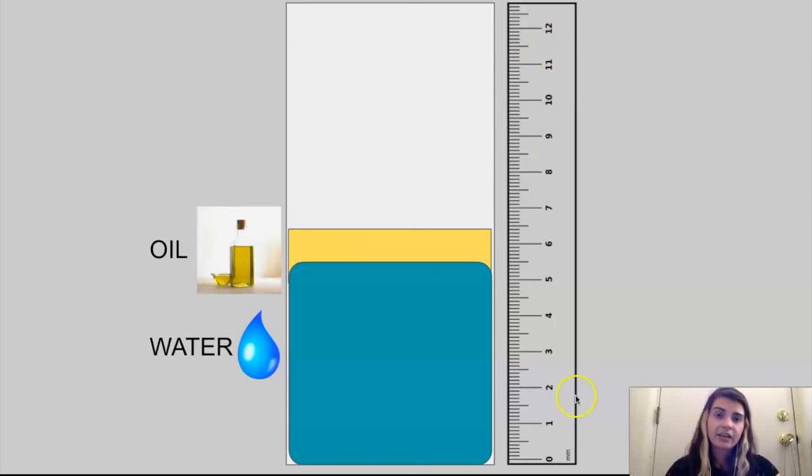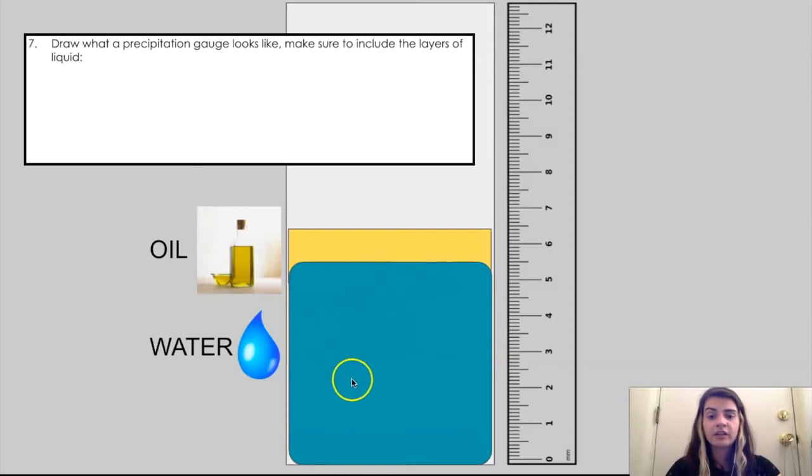I've included a scale here so we can do a sample reading. We only want to measure the water. To do that, we measure the line between the oil and the water, that's our exact water line. If I'm going through here, I'm seeing it's about five and a half millimeters of water. If we were to add the oil to it, it's about six and a half millimeters of total liquid, but we only want this water number. The five and a half is what we want.